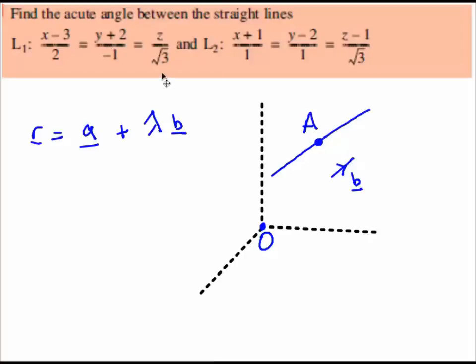Here we've got two lines, and you'll notice that they're given in Cartesian form. Cartesian form for lines in three dimensions is not always a very satisfactory thing to work with because, look at that, you've got two equals signs. It's handy to be able to convert that into parametric or perhaps into vector form, and we can do more with that. So that's the first thing that we're going to do.